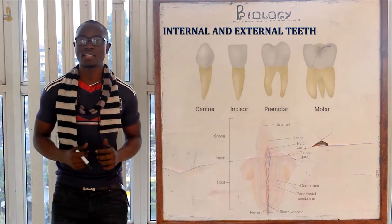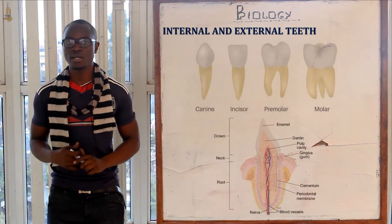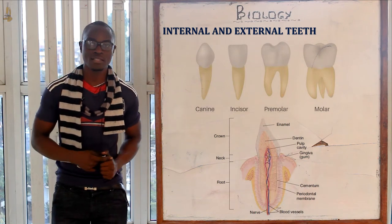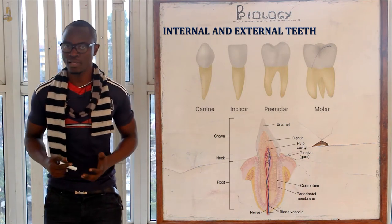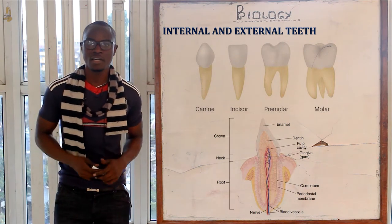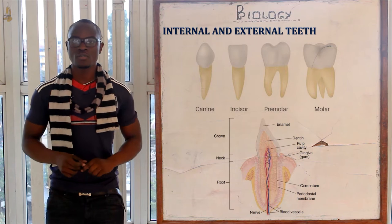Incisors and canines have only one root, premolars have two roots, and molars have three roots.